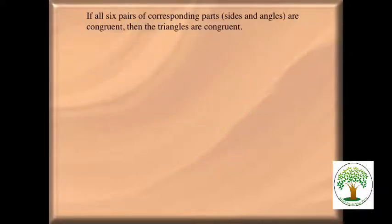If all six corresponding parts — the sides and the angles — are congruent, then the triangles are congruent. As far as you know right now, the only way for a triangle to be congruent is all the sides and all the angles. If I had to measure every side and every angle, that would be six things to prove, and that would make your proof longer.